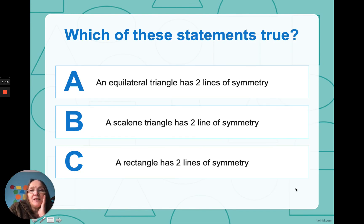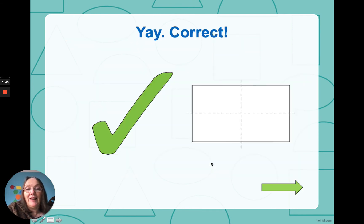Which of these statements is true? An equilateral triangle has two lines of symmetry. A scalene triangle has two lines of symmetry. A rectangle has two lines of symmetry. Well, we've just had a little look at a rectangle with two lines of symmetry. So, we know that is correct.